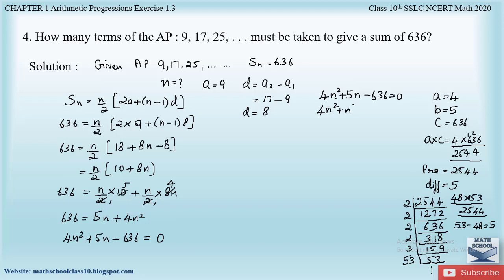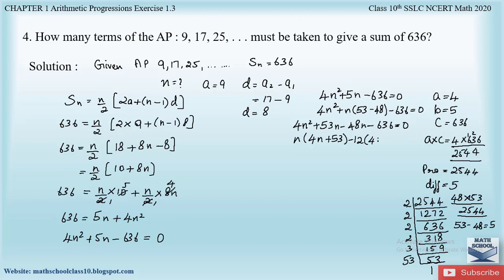Splitting the middle term: 4n² + 53n − 48n − 636 = 0. Taking n common from the first pair gives n(4n + 53), and taking −12 common from the second pair gives −12(4n + 53). So (4n + 53)(n − 12) = 0.